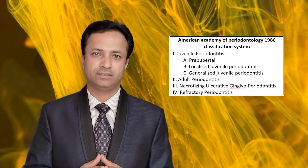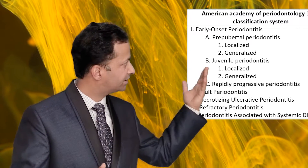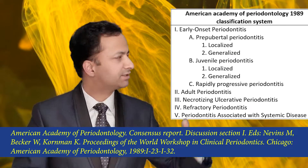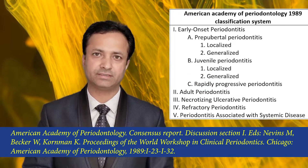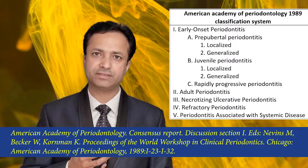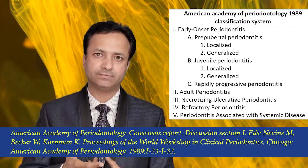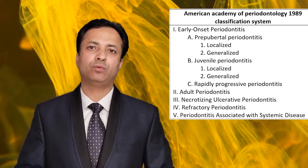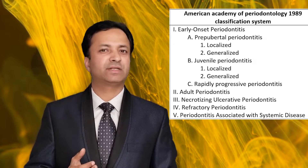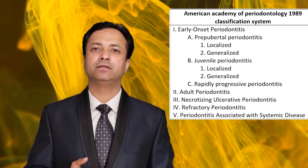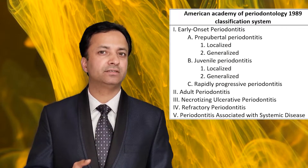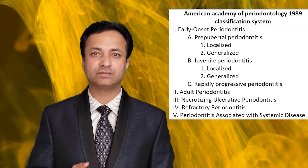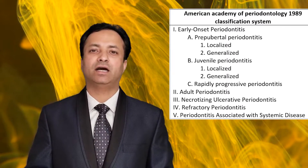There were many criticisms to the 1986 classification system, so in 1989 the AAP came up with a new classification system consisting of five categories: early onset periodontitis, adult periodontitis, necrotizing ulcerative periodontitis, refractory periodontitis, and periodontitis associated with systemic diseases. This system was dependent on five factors: presence or absence of clinically detectable inflammation, patient's age at disease onset, extent and pattern of attachment loss, rate of progression, and association of any systemic factor.